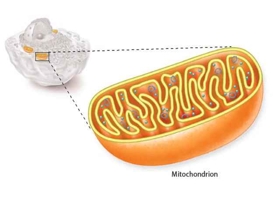Cellular respiration occurs in organelles called mitochondria. The mitochondrial electron transport chain is a key component in cellular respiration. The objective of this tutorial is to help you understand the steps of the electron transport chain.